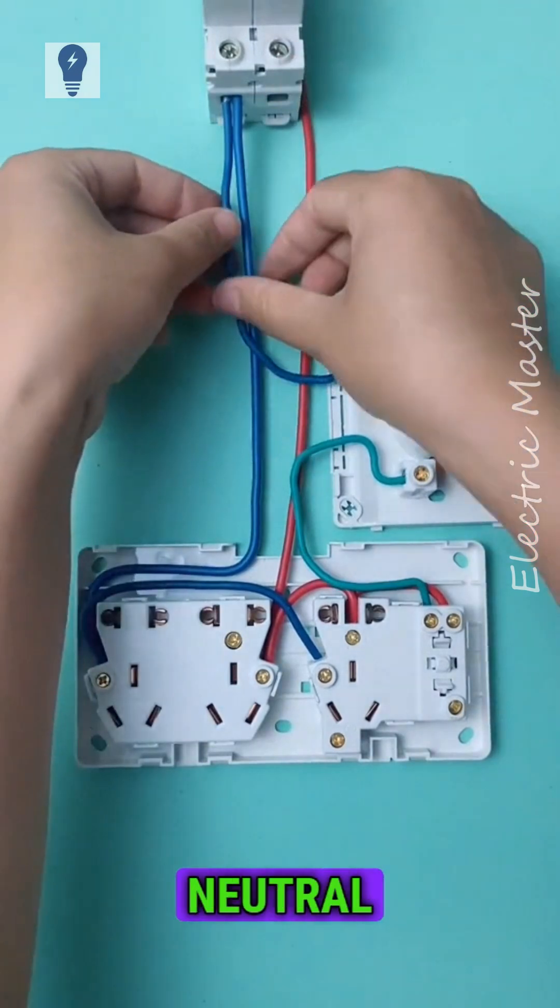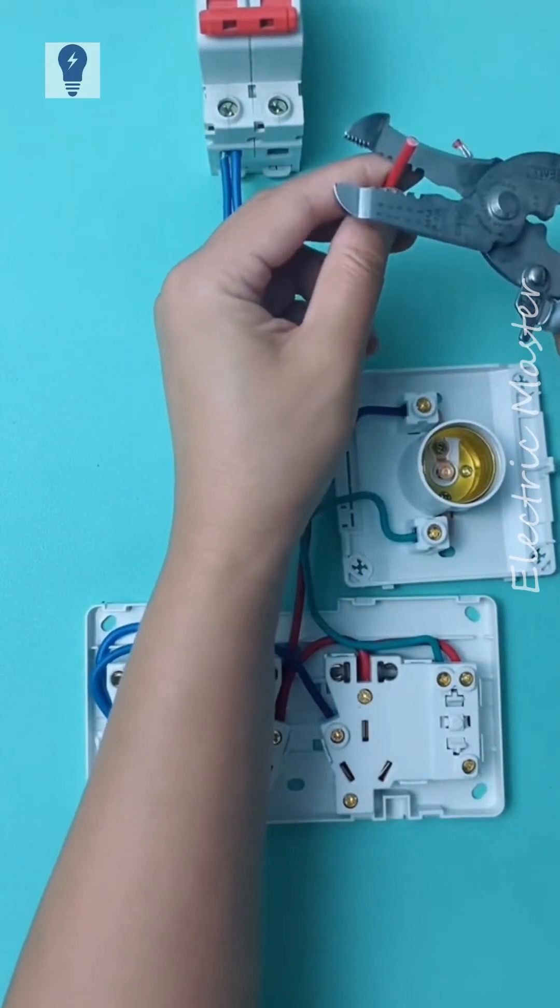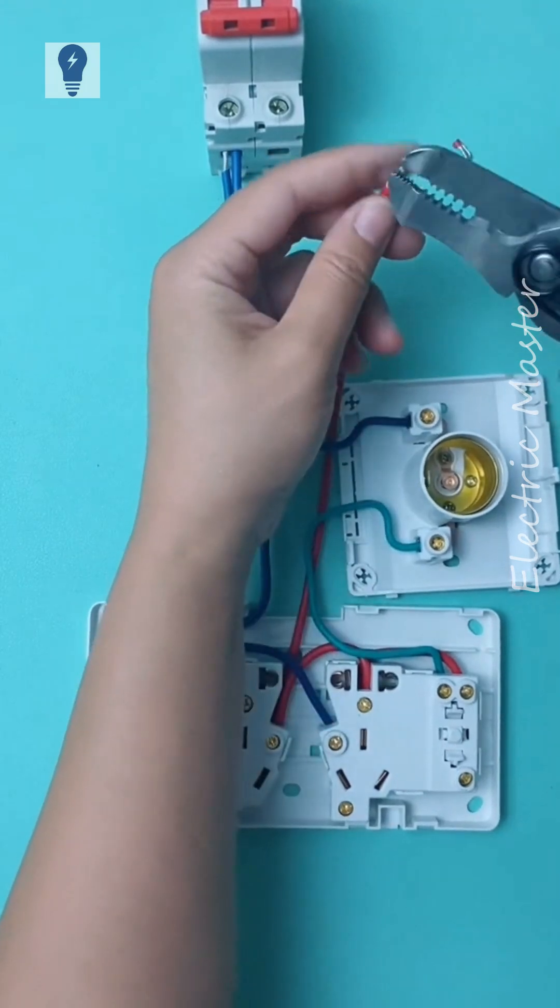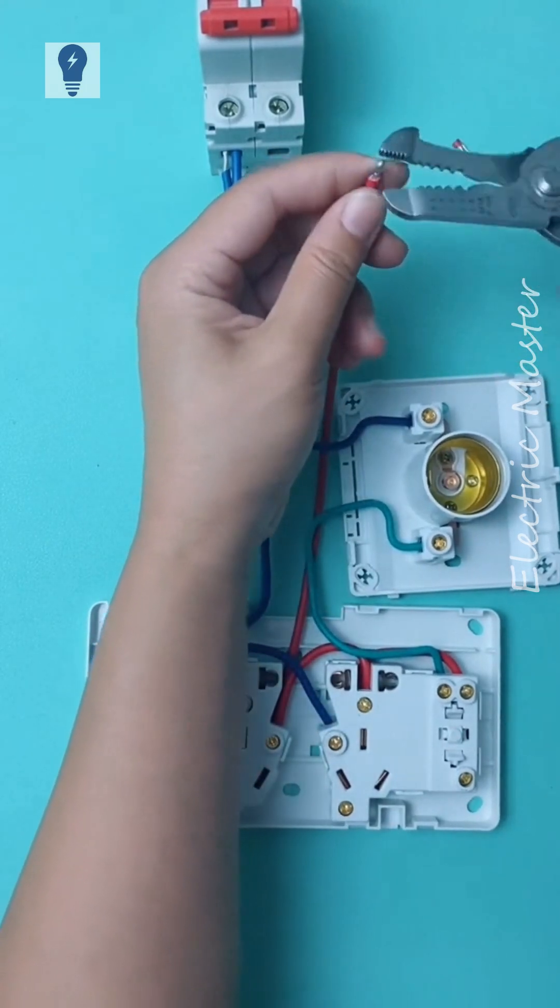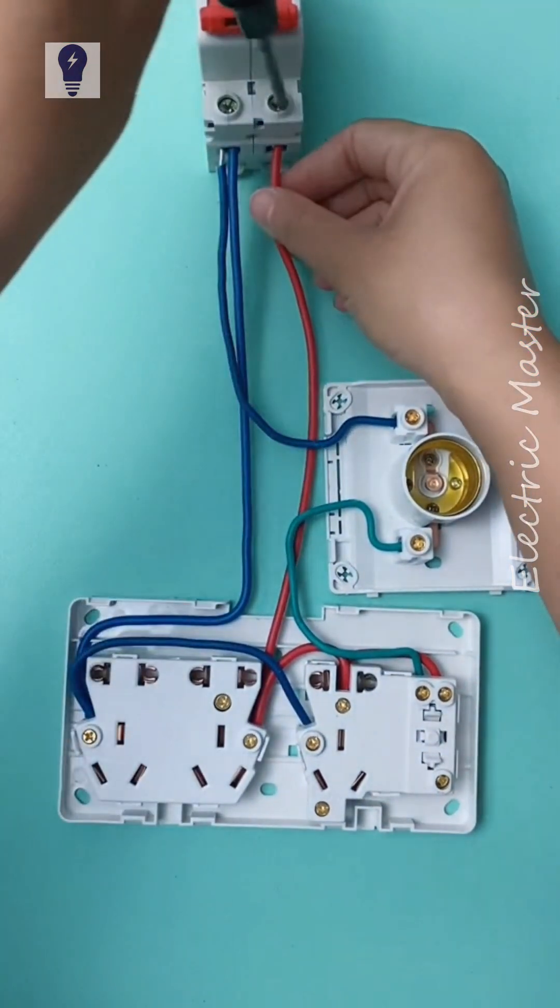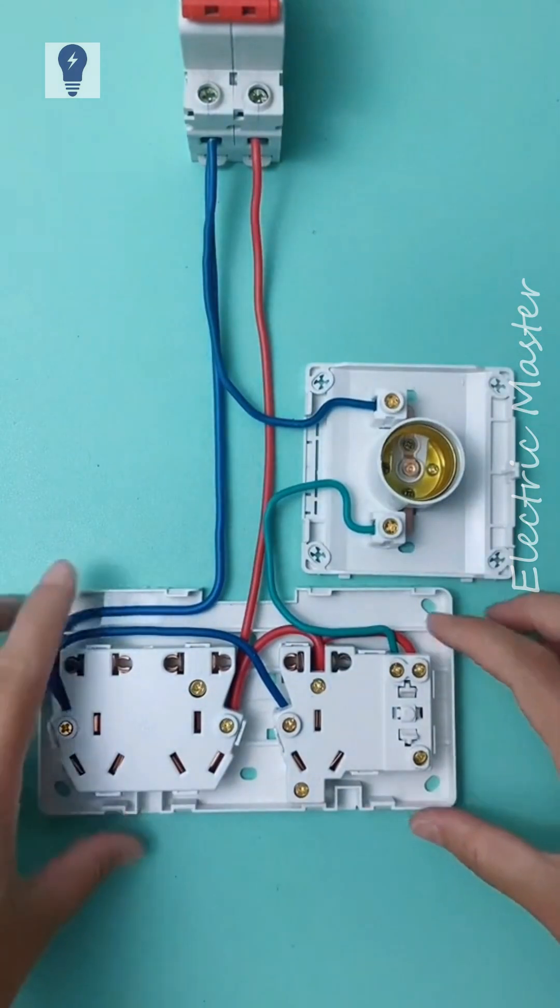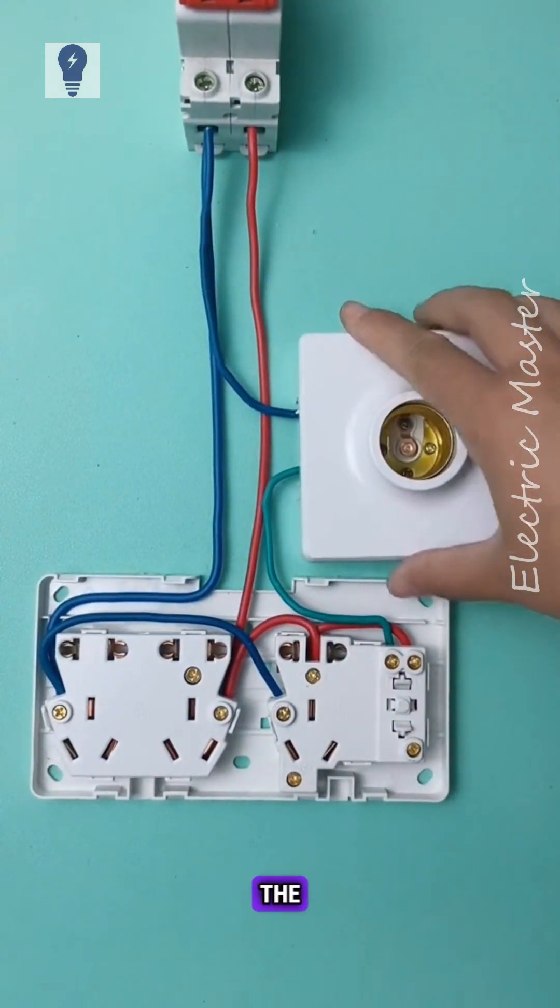Finally, connect the blue neutral and red live wires to the power supply. After wiring, let's install the light fixture.